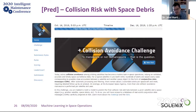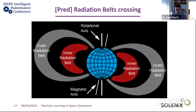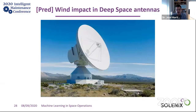Another prediction challenge is estimating the risk of ESA satellites colliding with space debris — we ran a competition on that too with interesting results. We're also predicting when satellites will cross radiation belts. These belts trap charged electrons and protons that can damage spacecraft. If we know in advance when a satellite will cross a radiation belt, we can protect it and maximize science return.